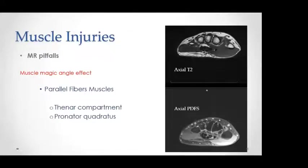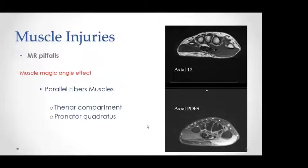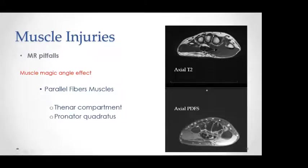A pitfall related to muscle injuries is related to muscle edema. Magic angle effect is not only a problem with tendons — it can also be a problem with muscles, especially parallel fibers muscles such as the thenar compartment and pronator quadratus. When you see edema in these muscles, it's not necessarily a muscle injury; it may just be magic angle effect.